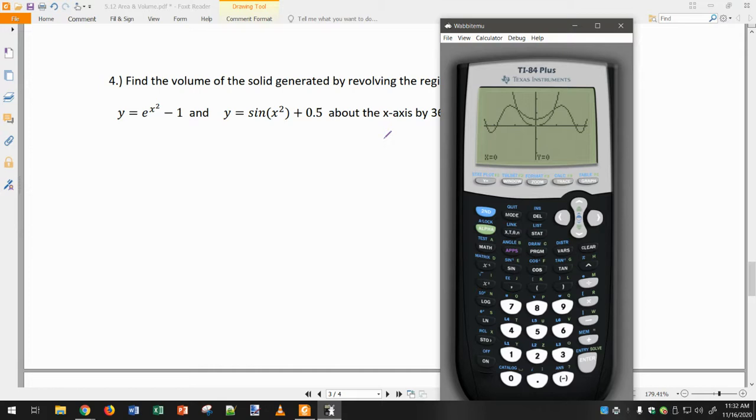We're going to use that formula but we also have to combine the boundaries method. So we take the one on top minus the one on bottom. The sine function is on top, the e to the x is on the bottom. We're going to have to find the intersection points. So second, calc, intersect, first curve, second curve, guess. That's going to be negative point eight nine one, so I'm going to write that point down.